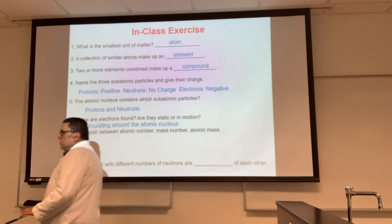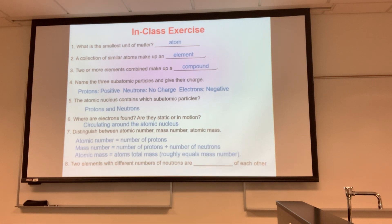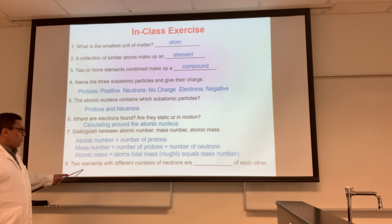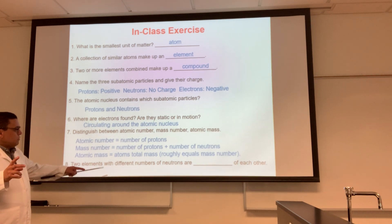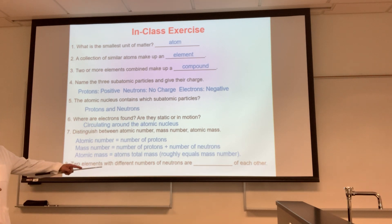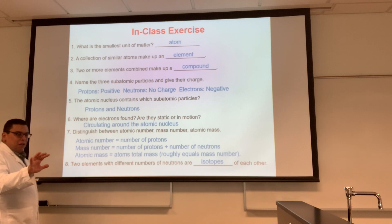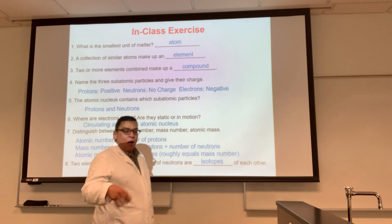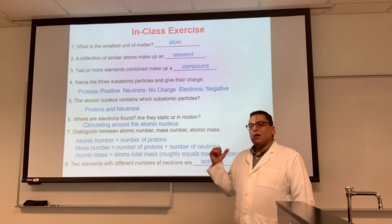I need to change the wording of number eight. It should say: two different forms of the same element that differ in the number of neutrons are said to be isotopes. The same element in different forms — how are they different? Number of neutrons. What are they of each other? Isotopes.